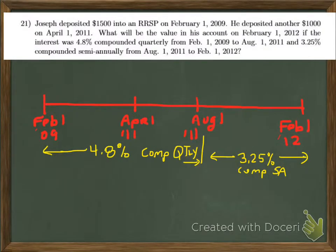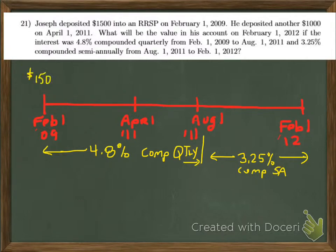This is from one of the review questions provided in the Blackboard course. We have Joseph who deposited $1,500 into an RRSP — that's a registered retirement savings plan — on February 1, 2009. He also deposited another $1,000 on April 1, 2011.